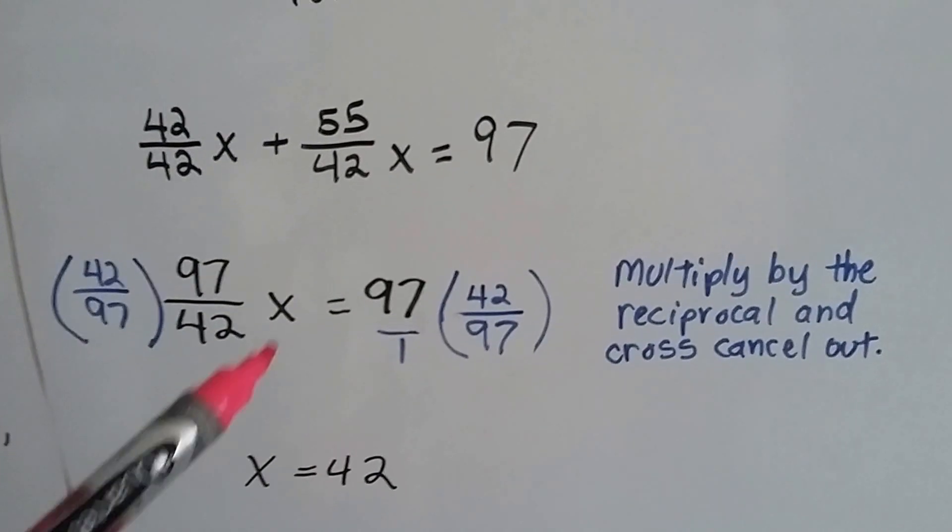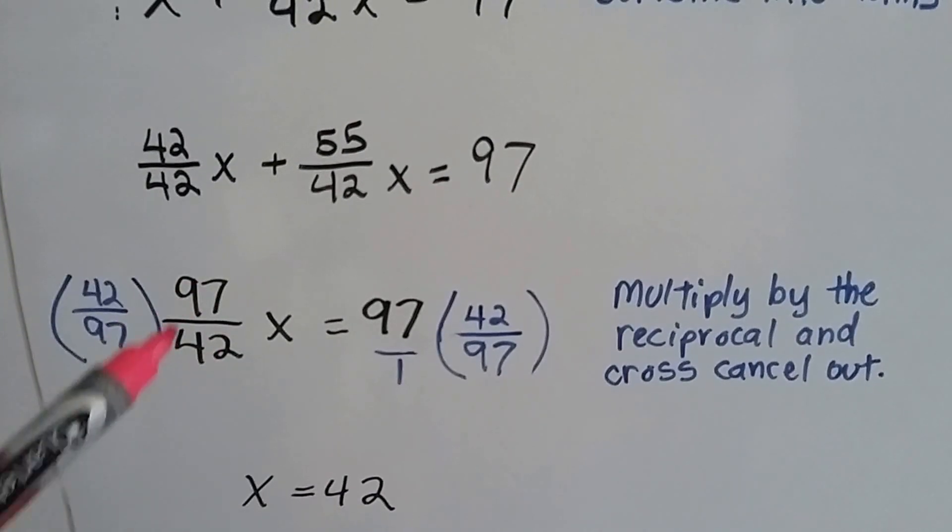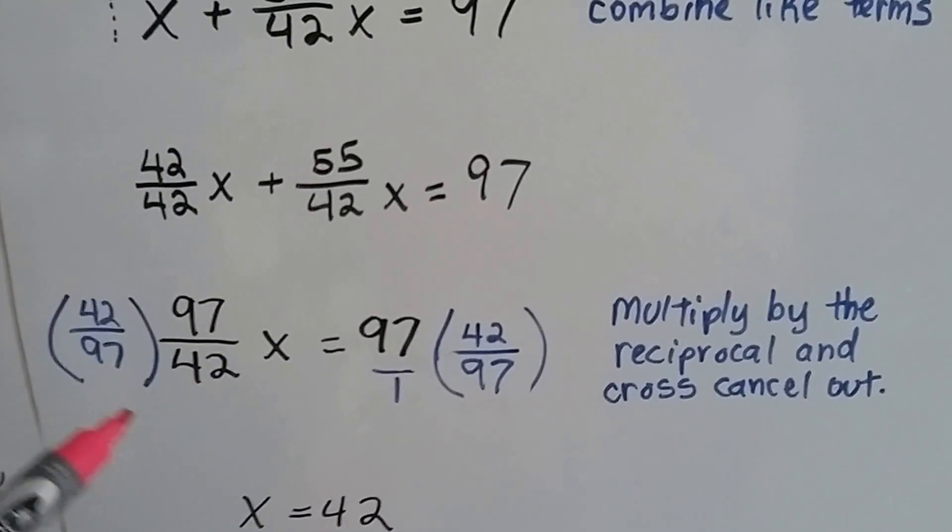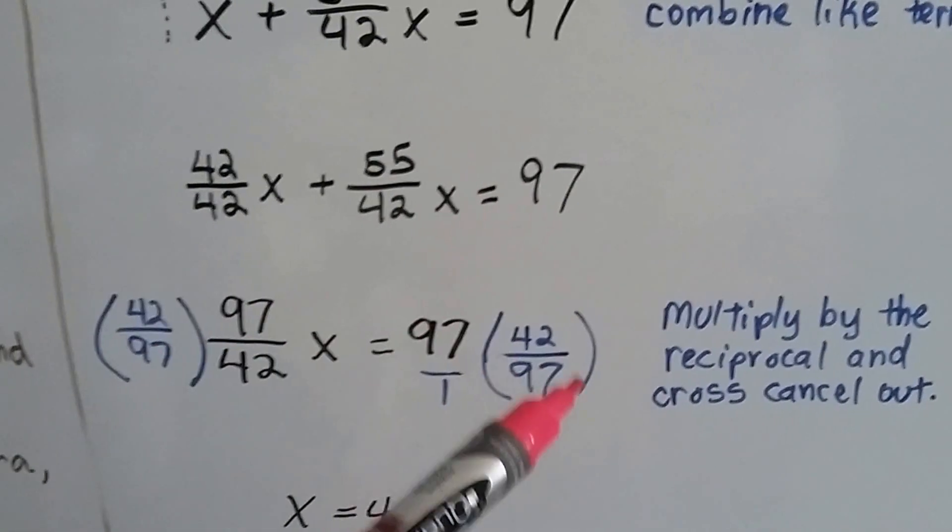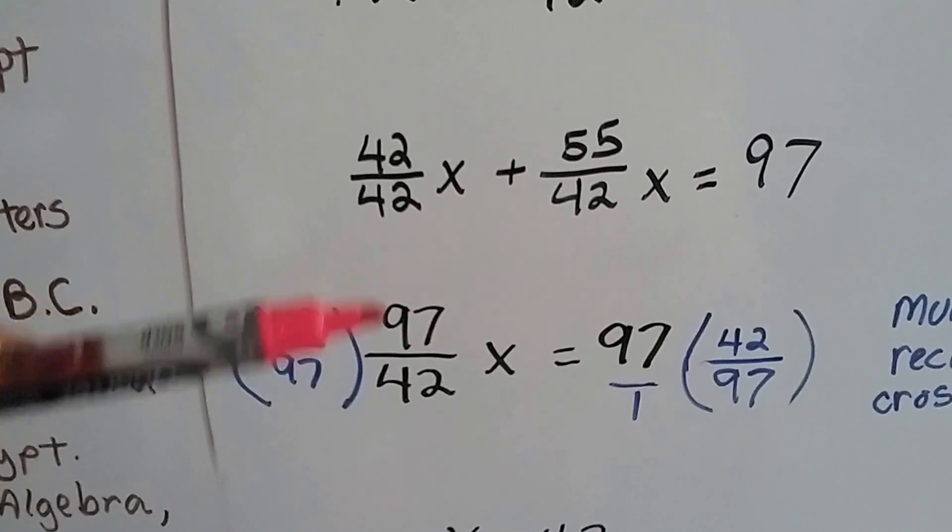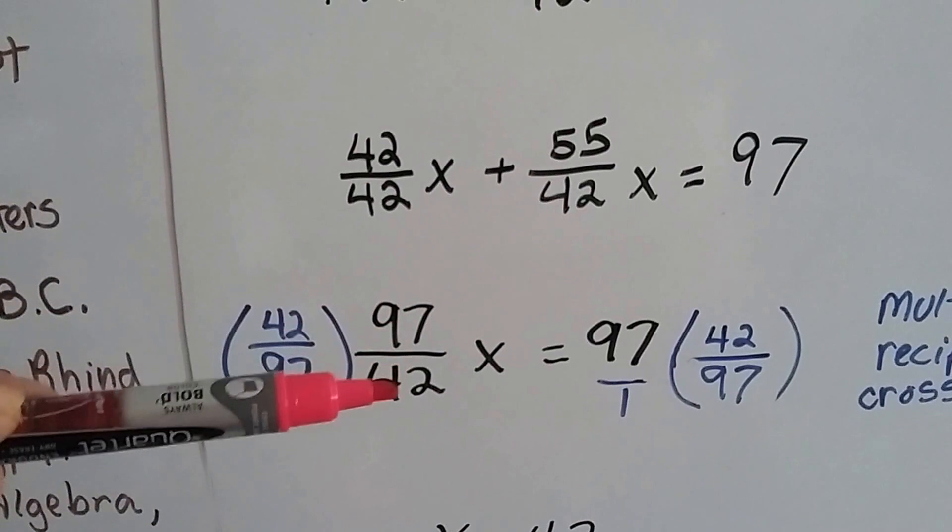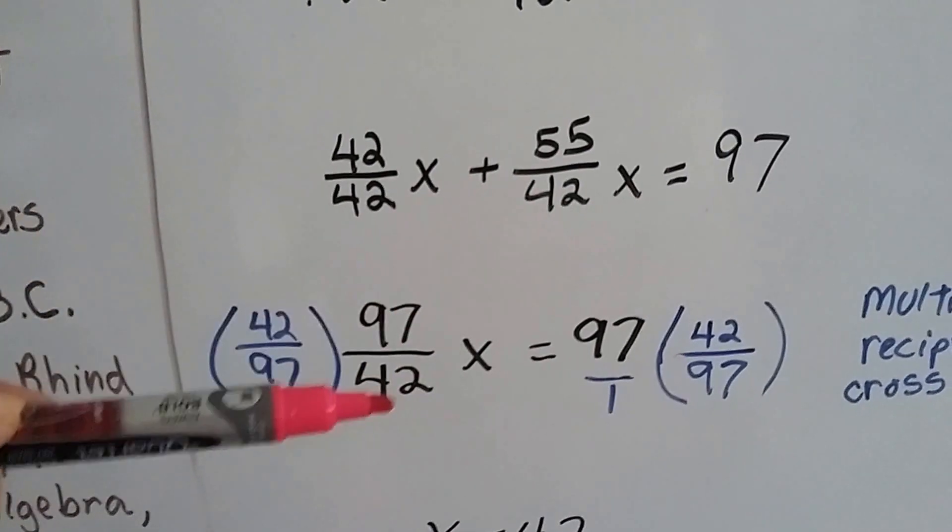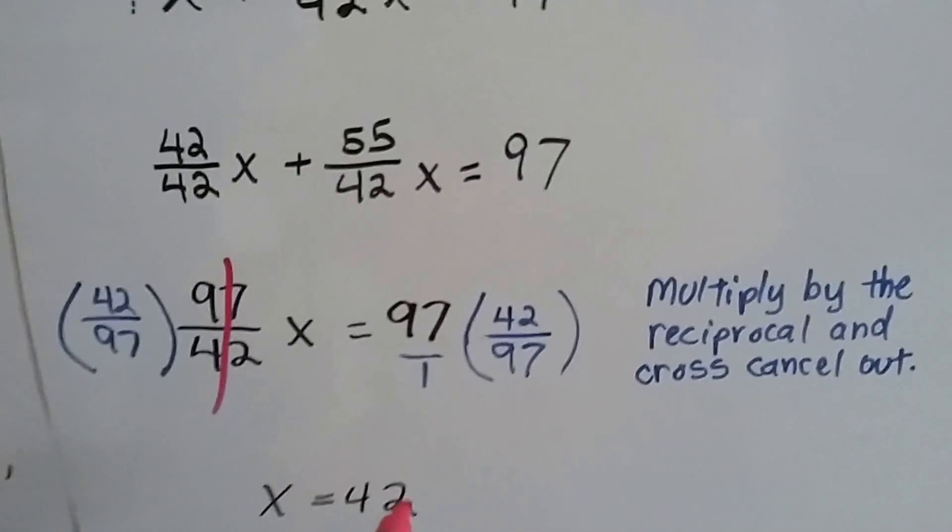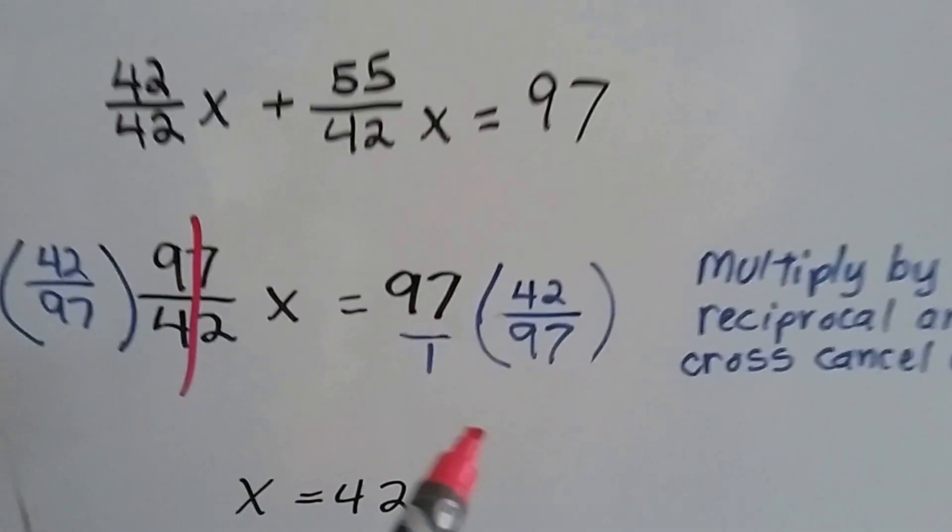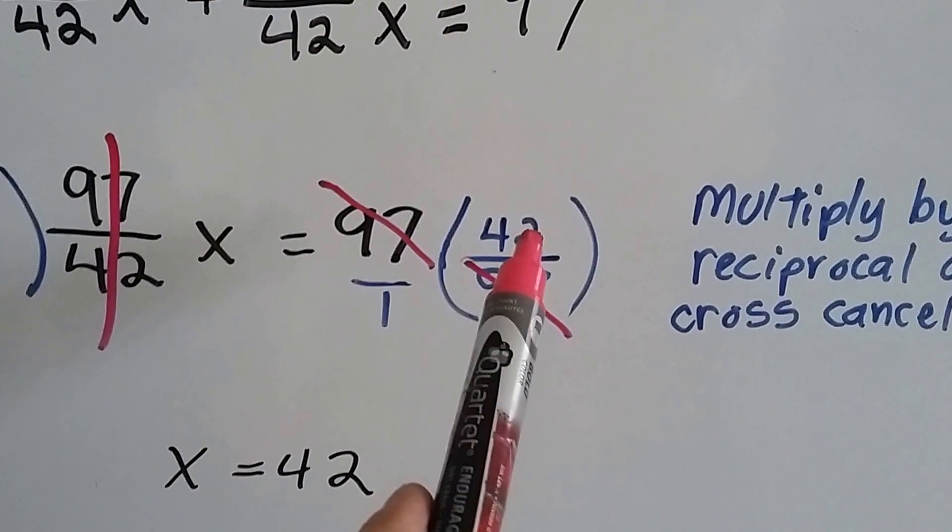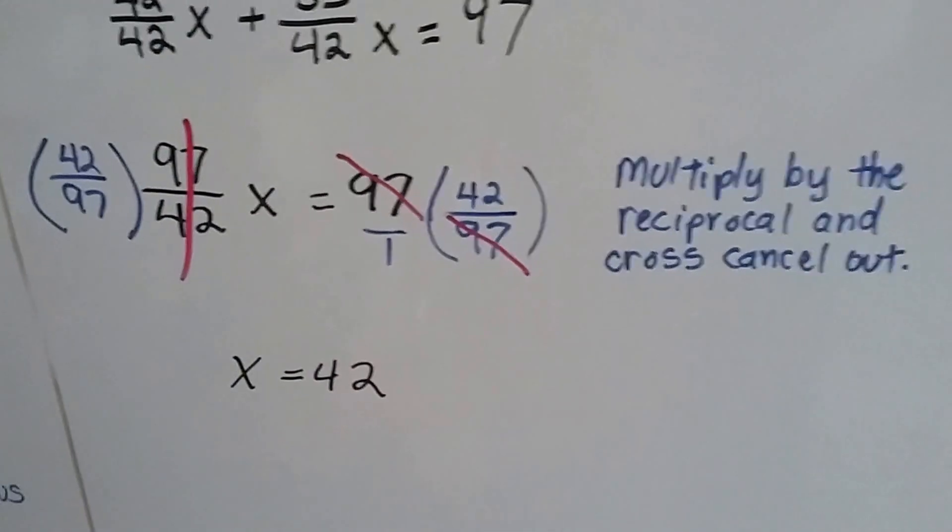Now, all we have to do to isolate this x is multiply both sides by the reciprocal of 97 over 42, which is the flipped around version. It's 42 over 97. We do it on each side, and we don't even need to do the math. We know that we need to multiply 42 times 97, but we're going to do it again here, which means whatever this number is, is going to be this number. And that means it's going to equal a 1. So without even having to do any math, we know this is a 1. And on this side, when we multiply it by 42 over 97, we can see that this 97 cancels out that 97, and all we're left with is 42 over 1. So our answer is 42.